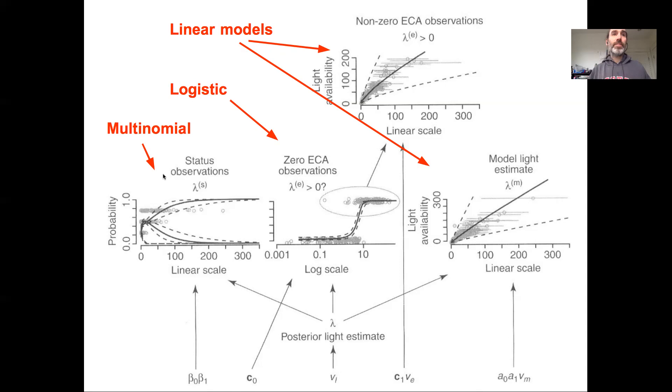And then we used a multinomial model, the same model that we discussed in the previous lecture, where we had this cumulative logit model. In this case, for the relationship between the light environment and three different canopy statuses: suppressed individuals at very low light, intermediate individuals, and the canopy individuals which have the highest light environment.